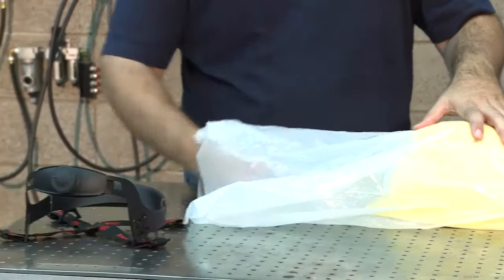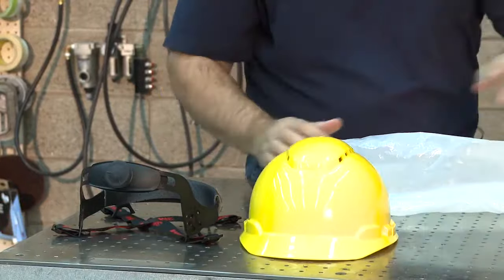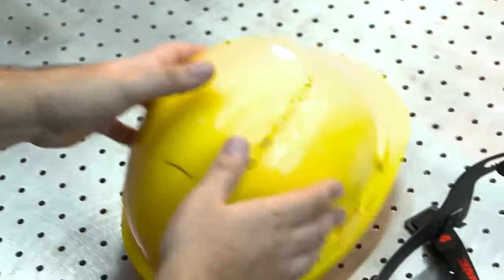Remove the hardhat and suspension from the packaging. Review the information on the packaging, then turn the hardhat upside down as shown.